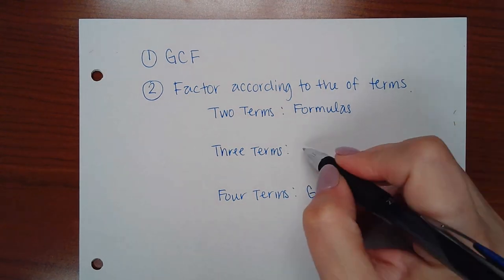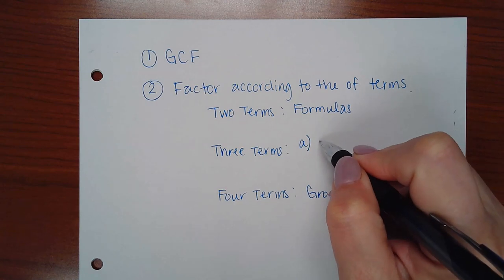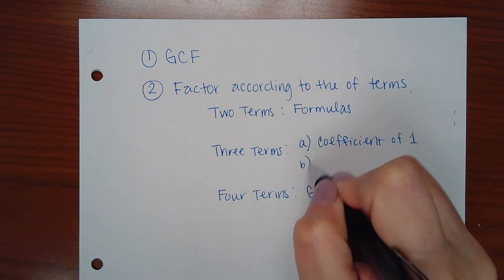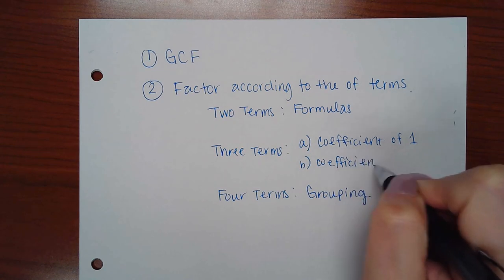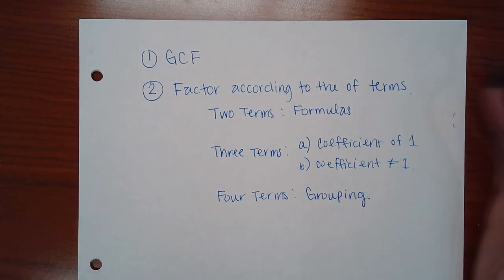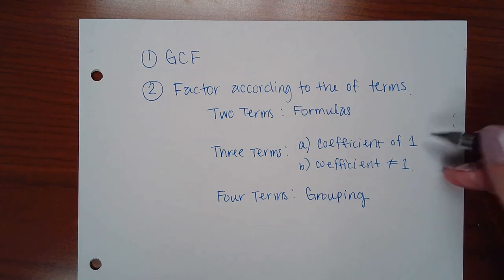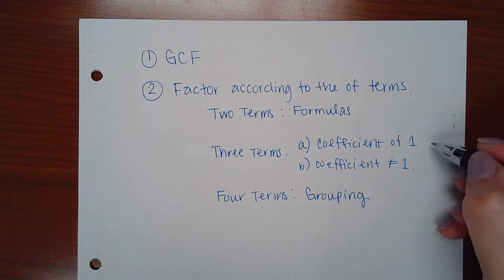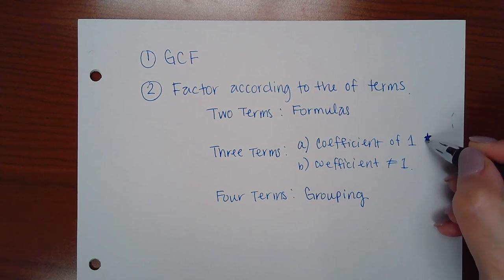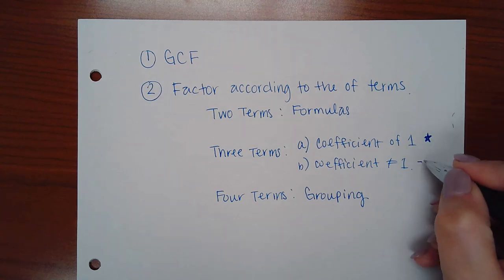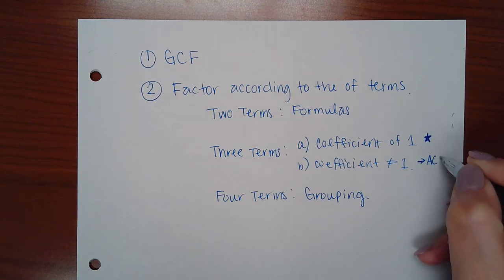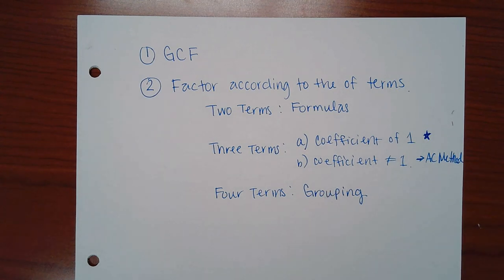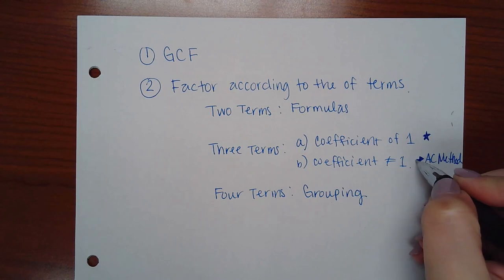If you have three terms, there are two situations: you can have a leading coefficient of one, or a coefficient that is not equal to one. If the coefficient equals one, we apply the same technique but it's easier with the magic numbers. If the coefficient is not one, you use the AC method, which turns the problem into a grouping problem.